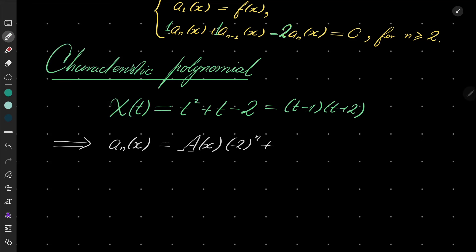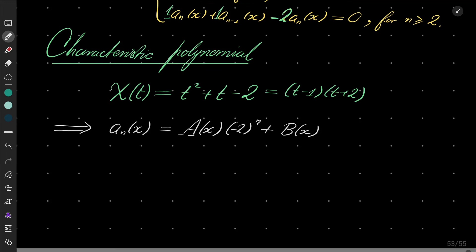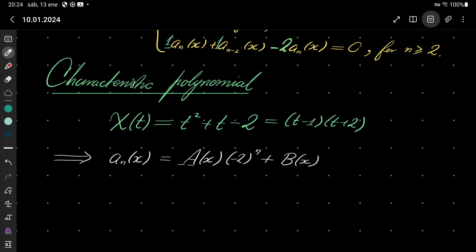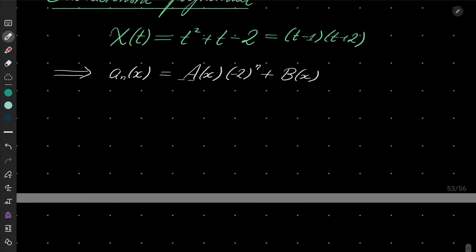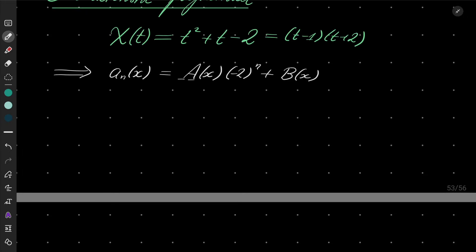That means a_n(x) equals some function a(x) times (-1)^n plus some other function b(x) dependent on x but independent of n.